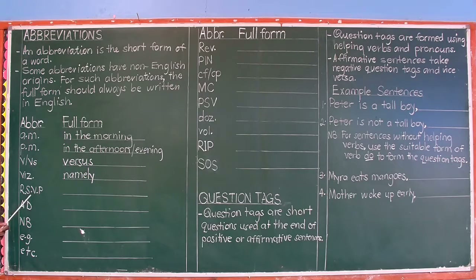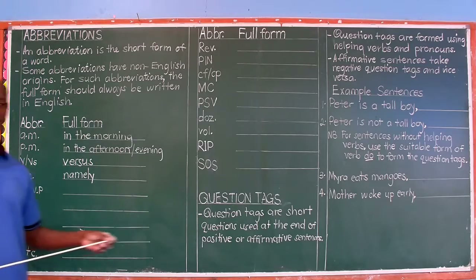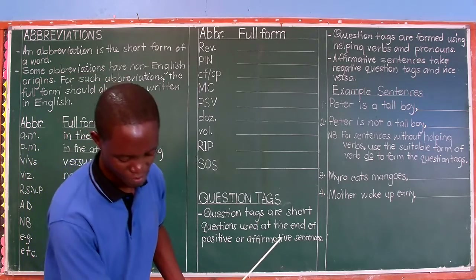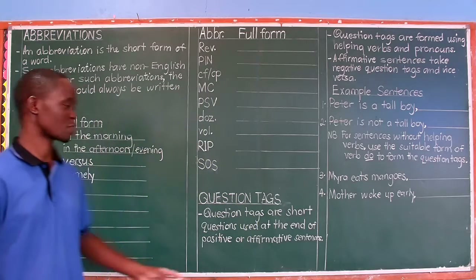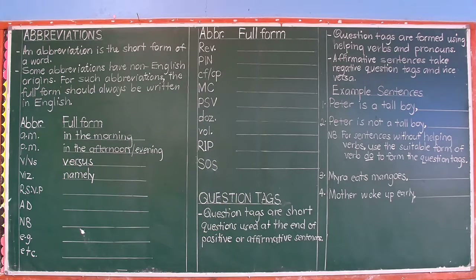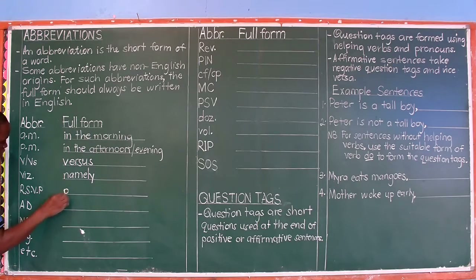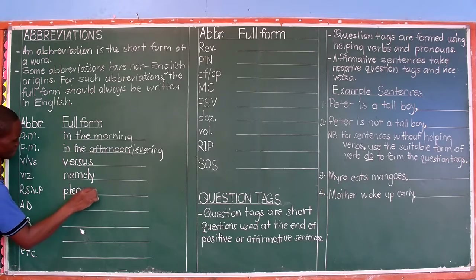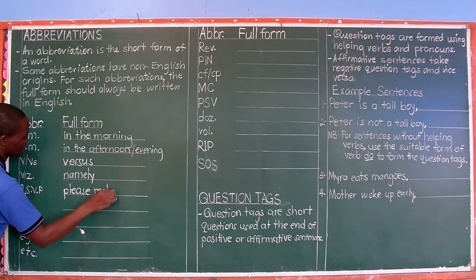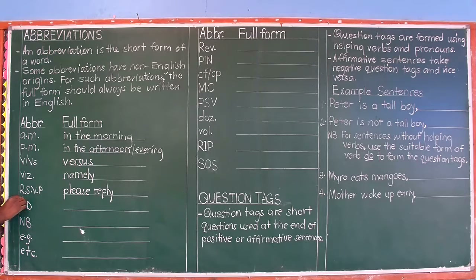Next, RSVP. This one is from French — it was borrowed from the language known as French, spoken in France. The English borrowed this abbreviation. RSVP stands for 'répondez s'il vous plaît', which means 'please reply'. Note that the short form is given in capital letters, and the answer for the short form is given in small letters.